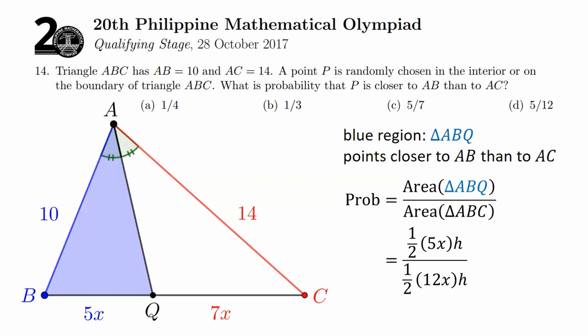We find in the denominator, except that the base that we're going to use is not 7X because it's not triangle AQC that we're doing the comparison with, but with triangle ABC. So, the base is BC, which is 12X. And so, simplifying this gives us the ratio of their areas, 5 over 12. And that, too, is our final answer.